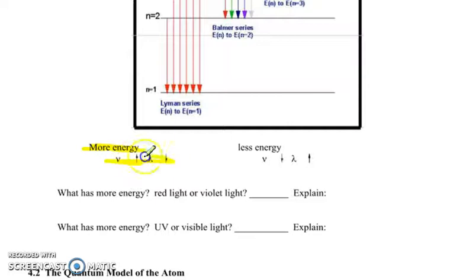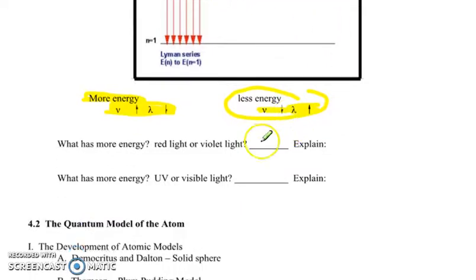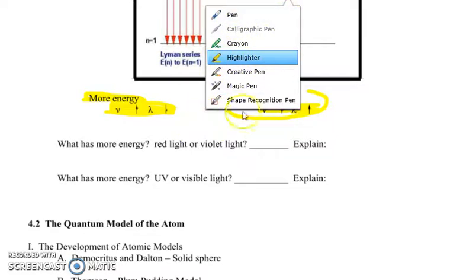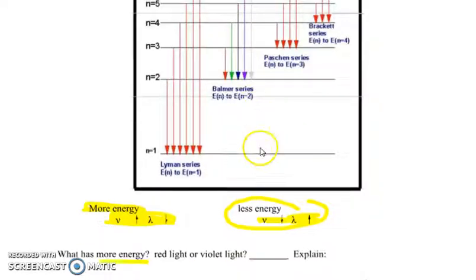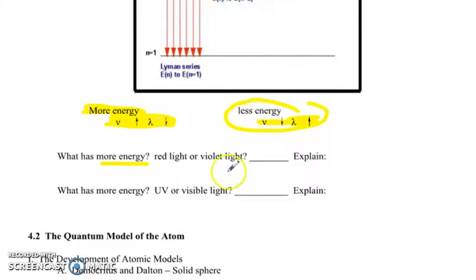The key takeaway for this part is that if there's higher energy, there's going to be a high frequency and there's going to be a low wavelength. Remember we saw on the previous page that high energy light are things like blue and purple, while lower energy lights are things like orange and red. What has more energy, red or violet light? Look back to your algebra and we see that violet has a lot more energy, it has a higher energy and also a higher frequency.